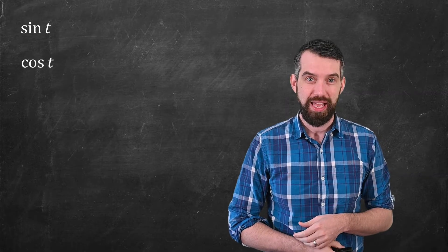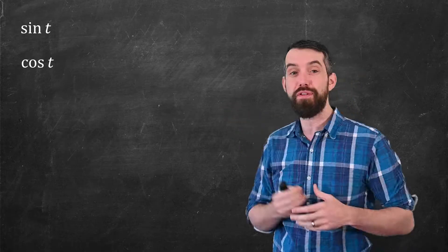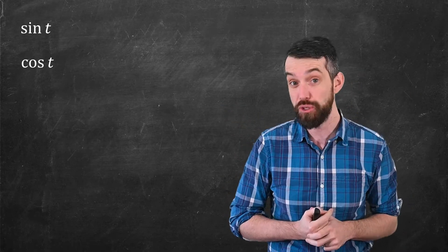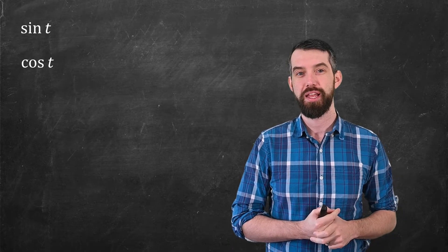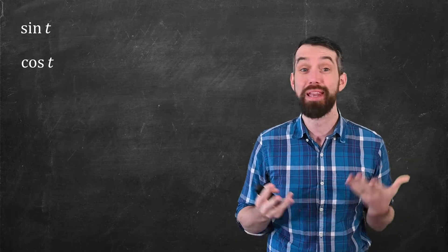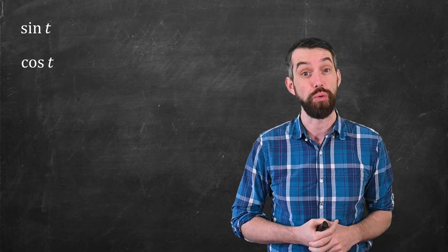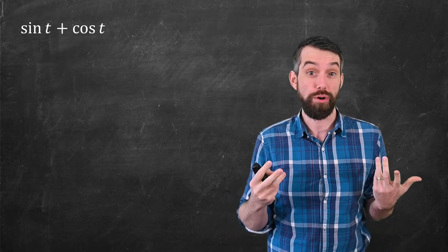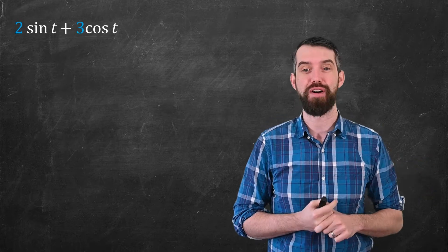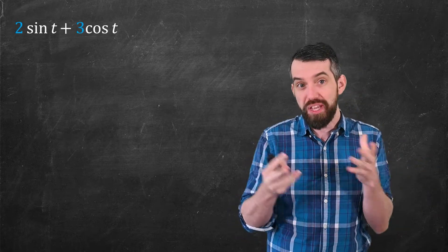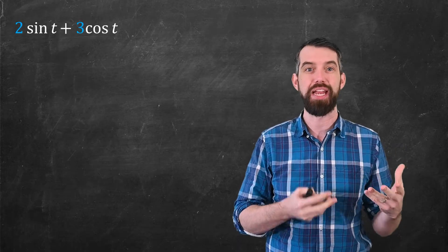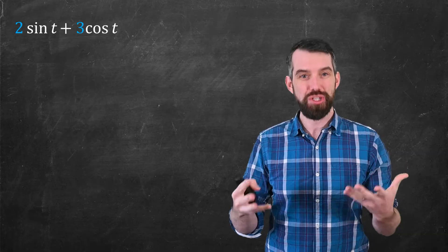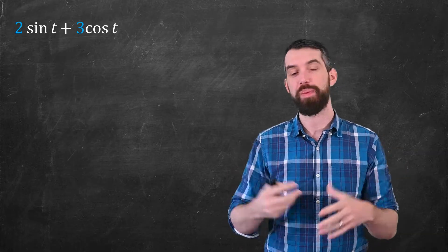Where I want to begin is by thinking about two different functions: sine of t and cosine of t, two different 2π-periodic functions. I can manipulate these in a way that's broadly analogous to what I do with vectors. For example, I could add these two different functions, or I could take scalar multiples — 2 sin(t) plus 3 cos(t) — a linear combination of sine and cosine.